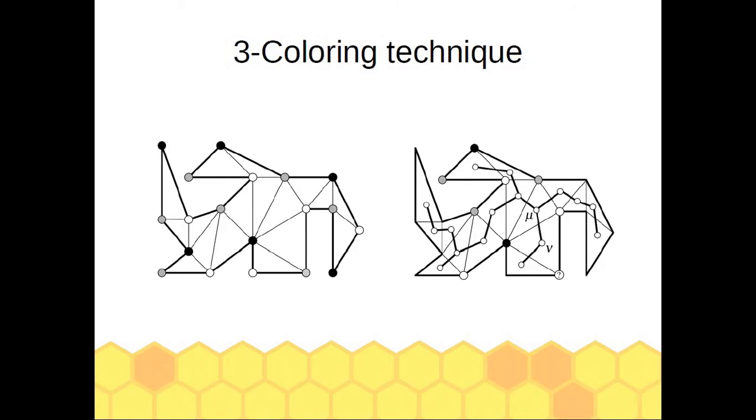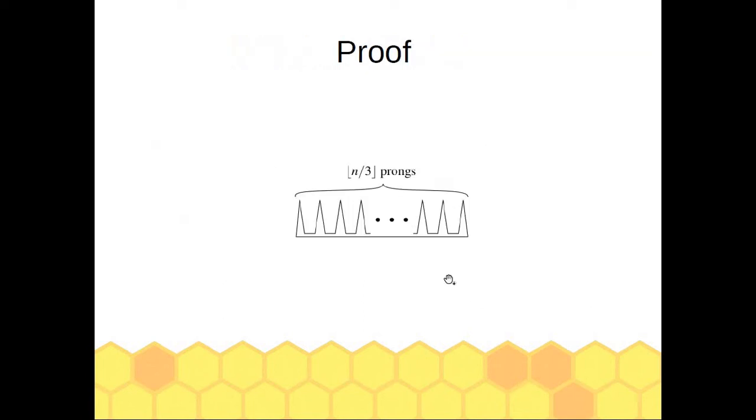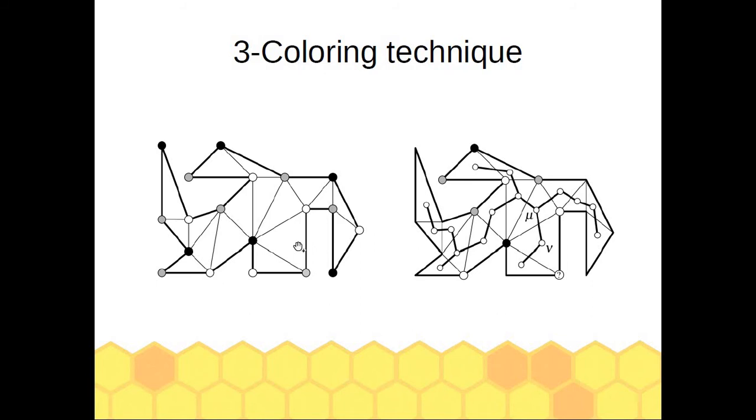More optimal is placing cameras at vertices. Is there a better one than this? Yes, there is a better one—we can do that by using the three-coloring technique. In three-coloring of a triangulated polygon, each and every triangle has a white, gray, and black vertex. We do this by constructing a dual graph of triangles.